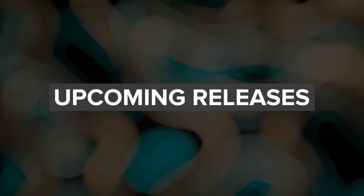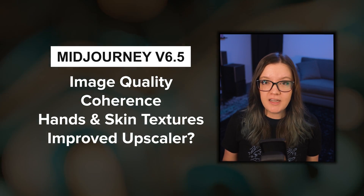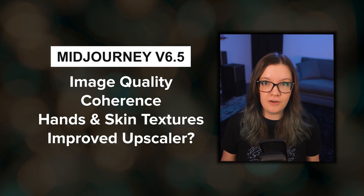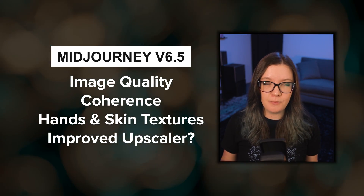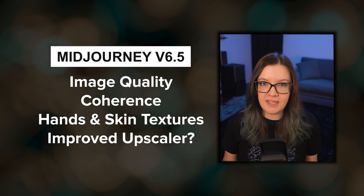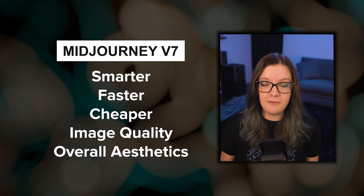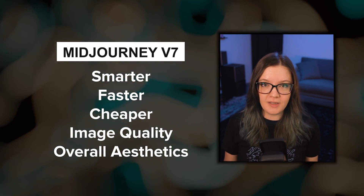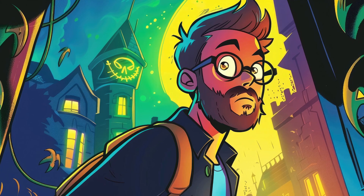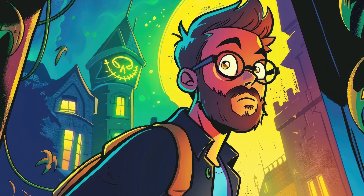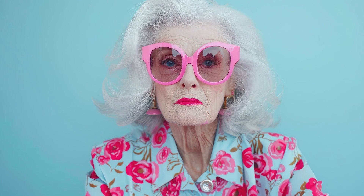In terms of upcoming releases, version 6.5 is currently in training, and if everything goes okay, it should be out in the next few weeks. We can expect improved image quality, coherence, better hands and skin textures, and possibly an updated image upscaler. V7 is also in the works. The V7 model should be smarter, faster, cheaper, and have image quality and aesthetic improvements. The team is also making steady progress on 3D and video — they are taking their time to ensure quality, so there's no release date yet.